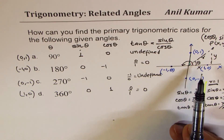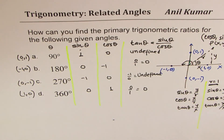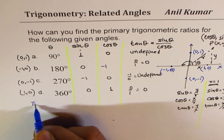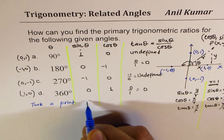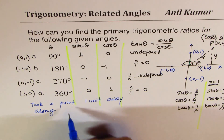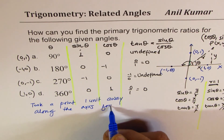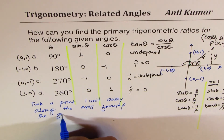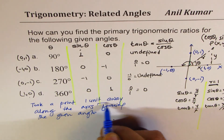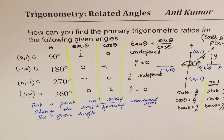Using the coordinate points we can very easily find the values of primary trigonometric ratios. In short, I took a point one unit away along the terminal arm forming the given angle. These were the points which helped us read the values for primary trigonometric ratios. I hope you understand and appreciate it — thanks for watching and all the best.